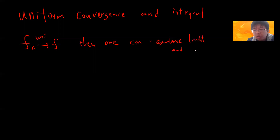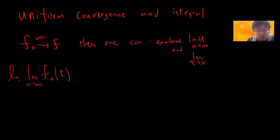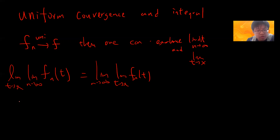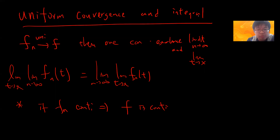Basically there are two limits: one goes to infinity and one approaches x. You can prove this, and there's a small corollary that if fn is continuous and uniform convergence holds, one can definitely get that f is also continuous.